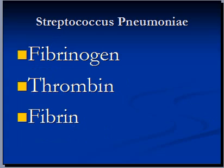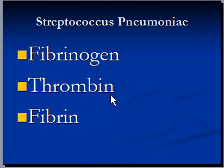Fibrinogen is a protein in blood plasma which is essential for blood clotting. Thrombin is an enzyme in blood that converts fibrinogen into fibrin. Fibrin is a protein that forms a mesh or network where red blood cells are trapped to make a clot at the site of injury, so fibrin is very important to stop bleeding.